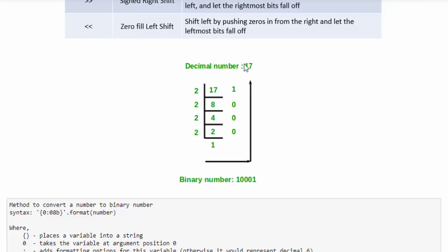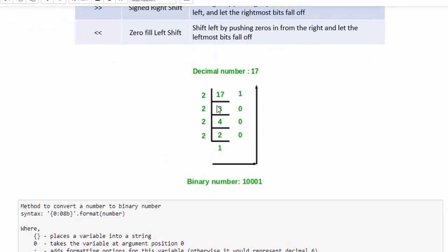If you want to change a number to a binary number, in this example, 17 is divided by 2. So 2 8s are 16, the remainder will be 1. 2 4s are 8, the remainder is 0. 2 2s are 4, the remainder is 0. Then 2 1s are 2. If you write in this way, 10001, this is the binary number for 17.